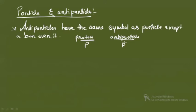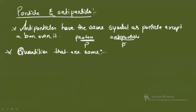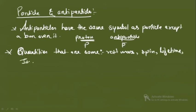There are quantities that are the same for both particle and antiparticle: rest mass, spin, lifetime, and isospin. These four quantities are identical for a particle and its antiparticle.